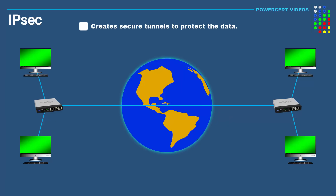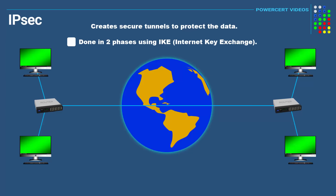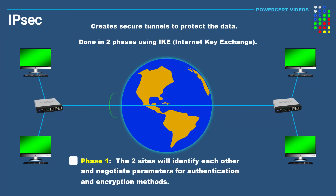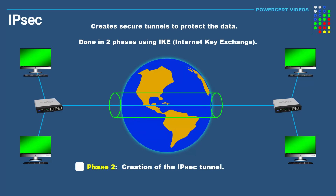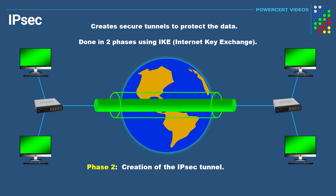The way IPsec works is by creating secure tunnels to protect the data during transfer. This is done in two phases using a protocol called IKE, or Internet Key Exchange. The first phase is where the two sites identify each other and negotiate parameters for authentication and encryption methods — this is the first tunnel used to protect the negotiation process. The next phase, phase two of IKE, is the creation of the IPsec tunnel, and it's in this tunnel where the data is going to be exchanged between the two sites. But before the data is sent, it needs to be protected.